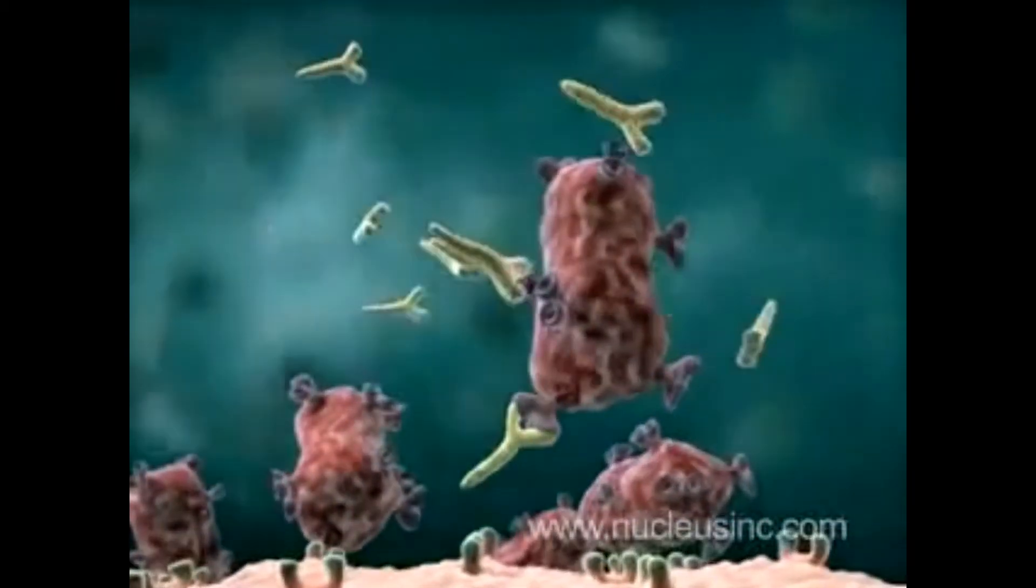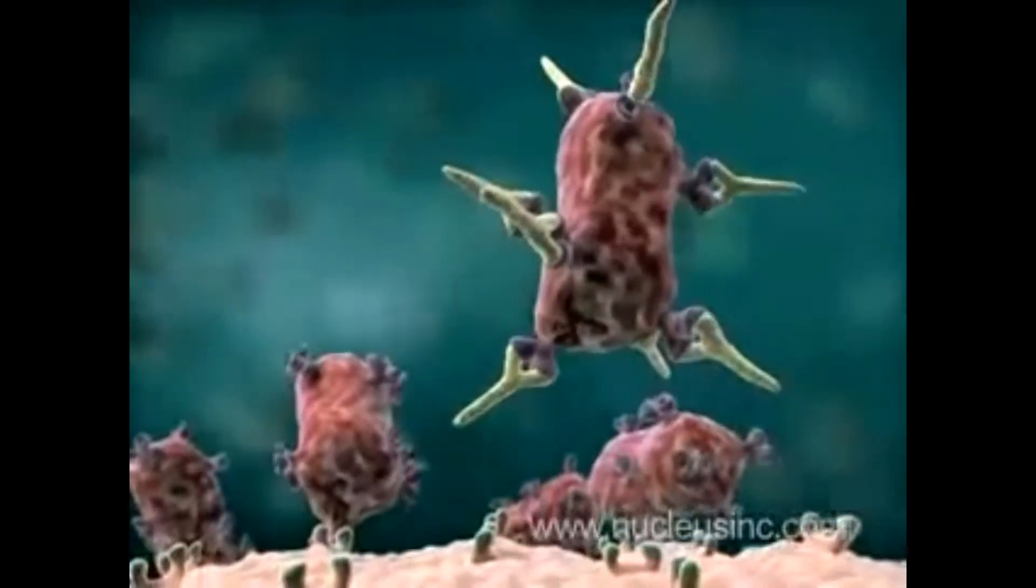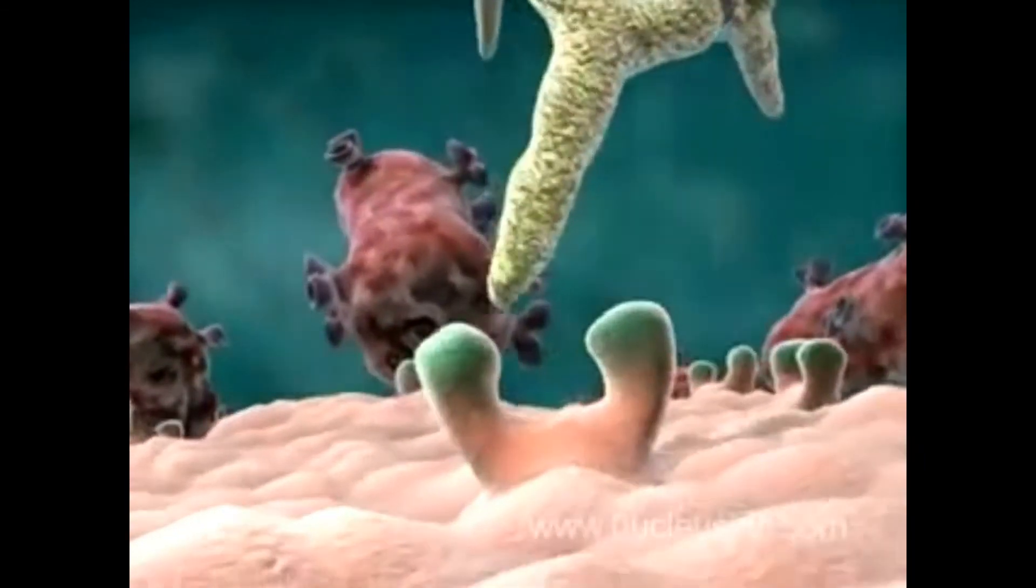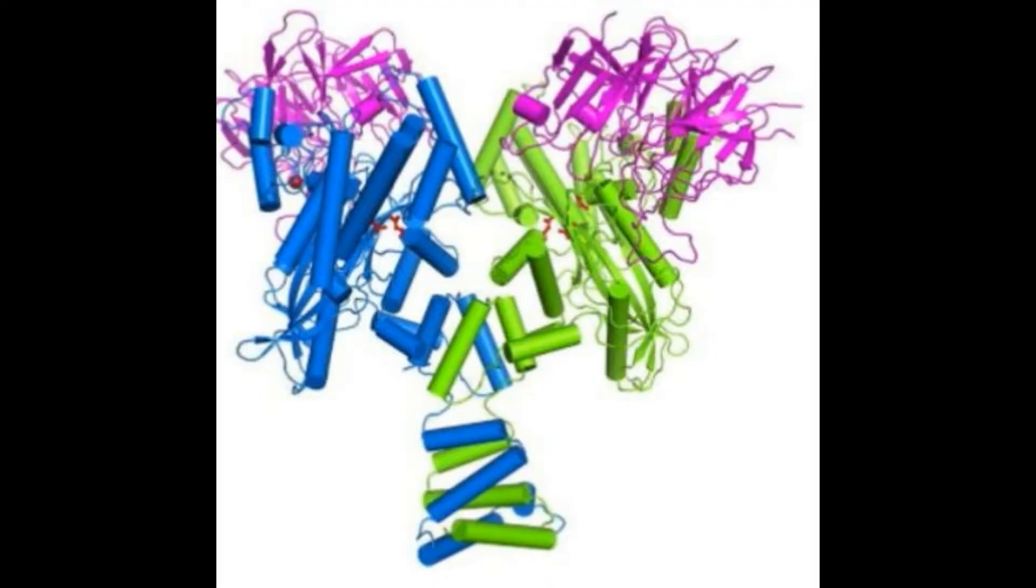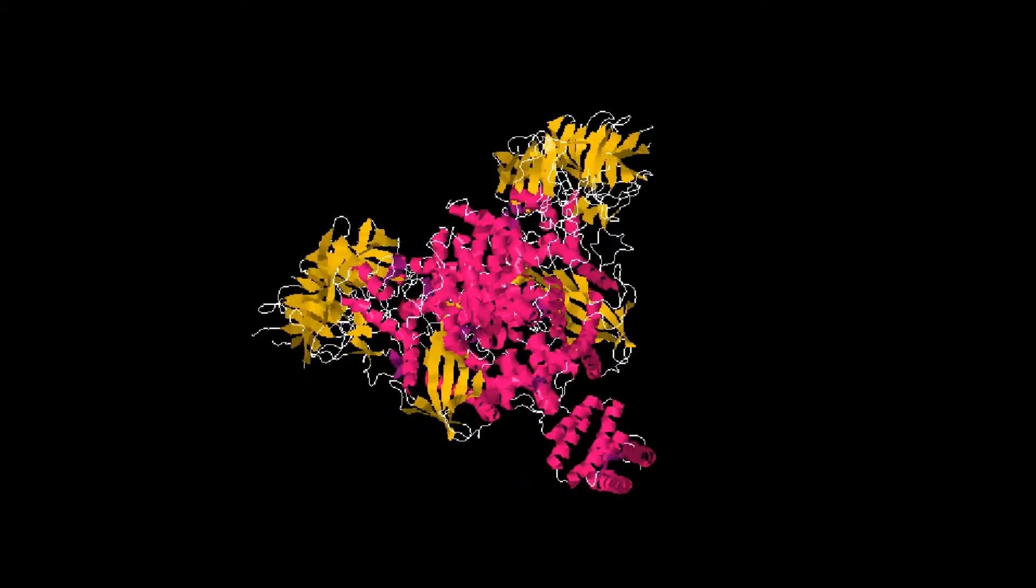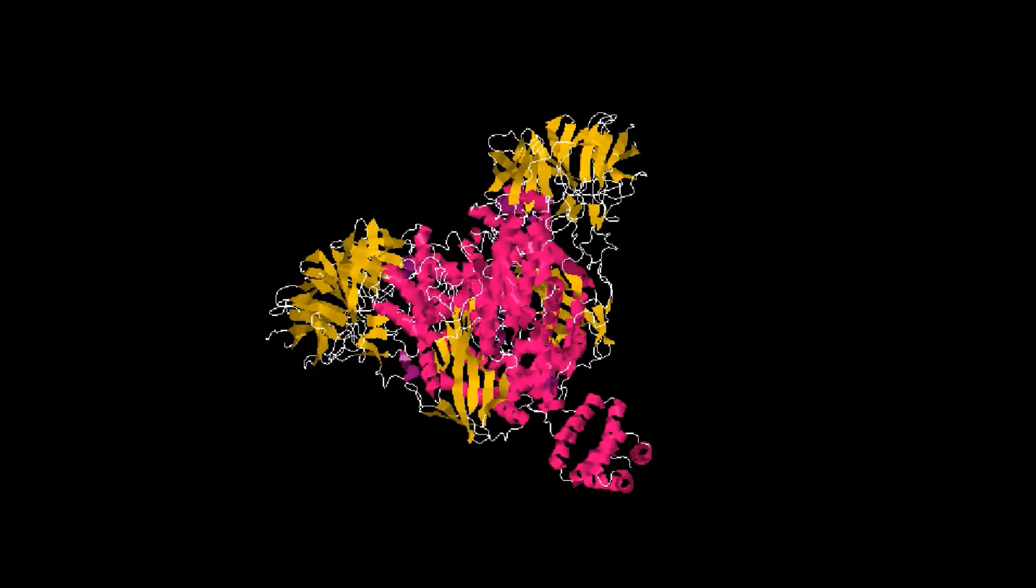The immune system generates this diversity of antibodies in a process called VDJ recombination, where the VDJ genes are shuffled, cut, and recombined to create millions of permutations. RAG1 and RAG2 are proteins that play an important role in this process that occurs in B cells and T cells during their maturation.